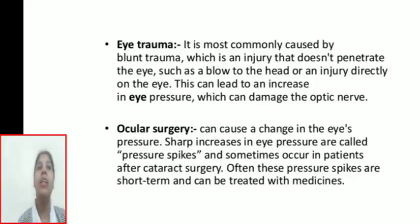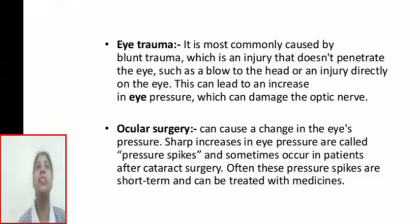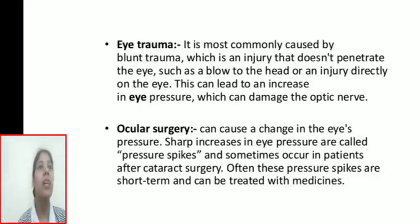Eye trauma is most commonly caused by blunt trauma — an injury that doesn't penetrate the eye, such as a blow to the head or an injury directly on the eye. This can lead to an increase in eye pressure, which can damage the optic nerve. Ocular surgery can also cause changes in eye pressure. Sharp increases in eye pressure, called pressure spikes, sometimes occur in patients after cataract surgery, but are often short-term and can be treated with medicines.